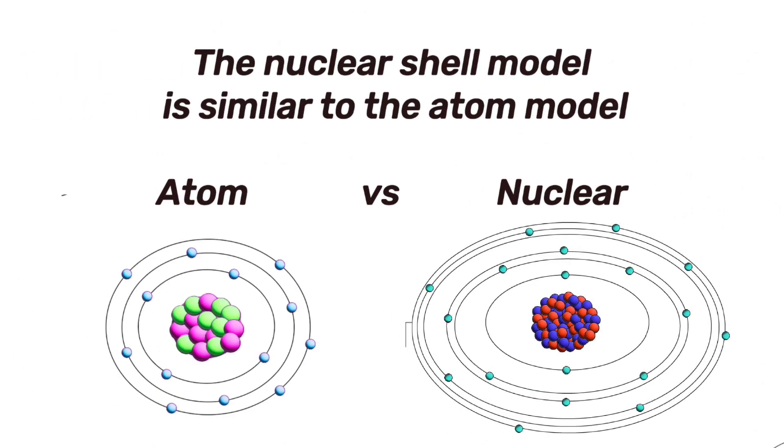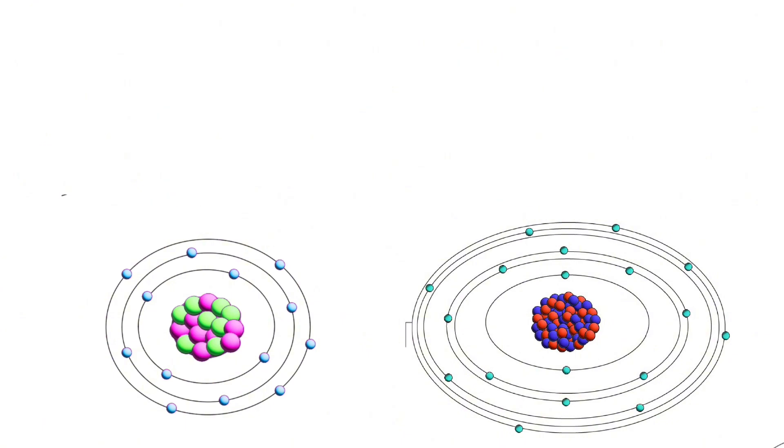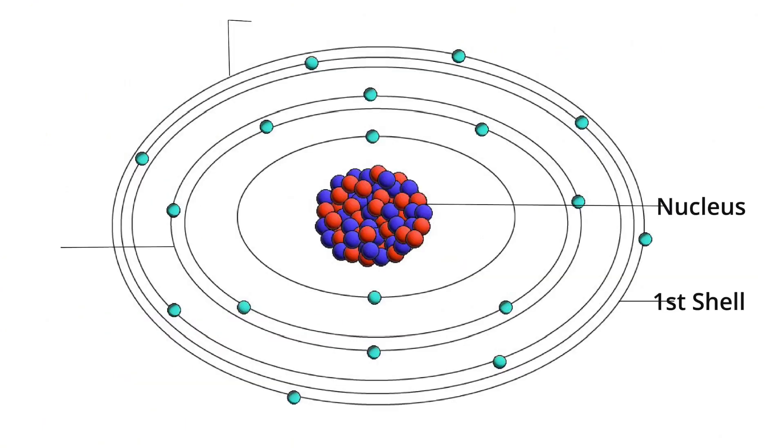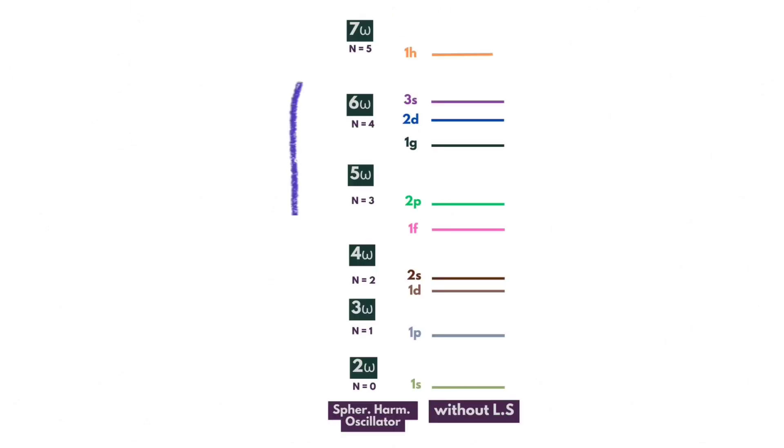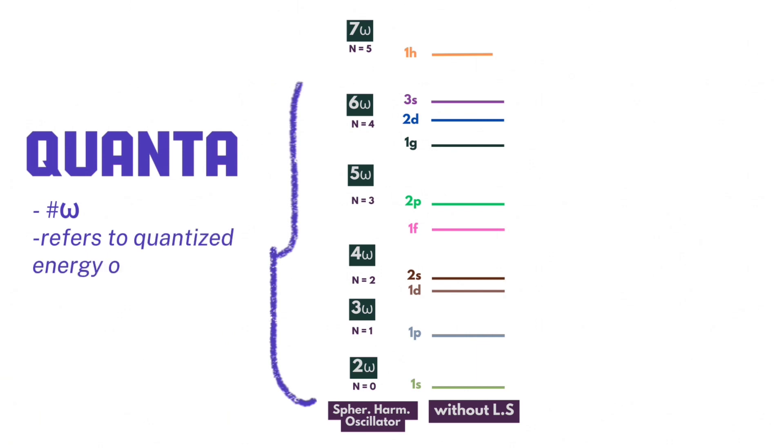Well, it's pretty close to that. The nuclear shell model is similar to the shell model of the atom. Like electrons, nucleons also have shells and subshells and each nucleon occupies a well-defined energy level. This is the quanta. The quanta in the shell model refer to the quantized energy levels or shells that nucleons occupy within a nucleus.